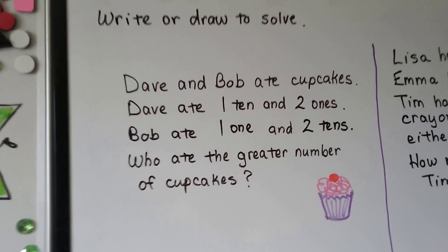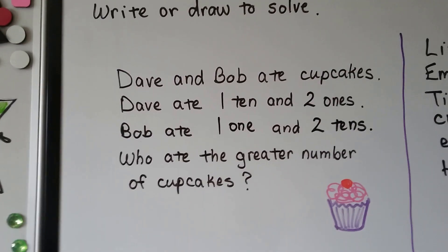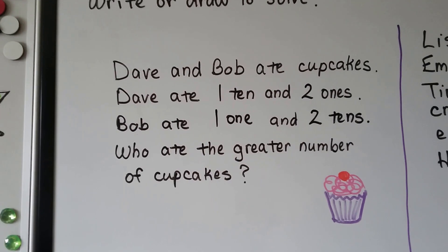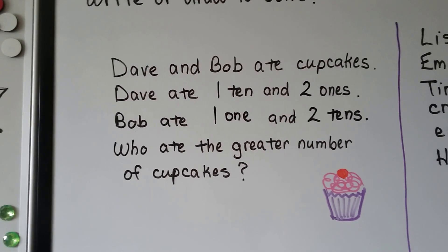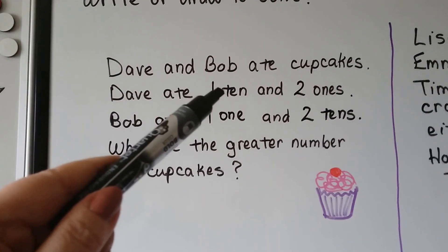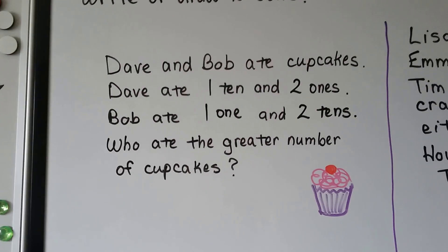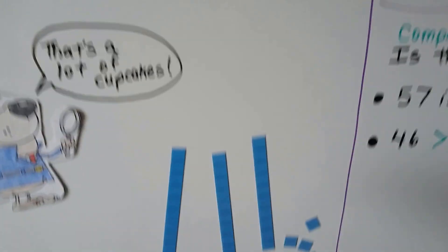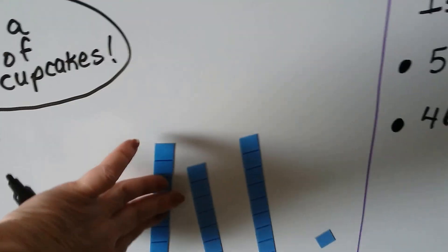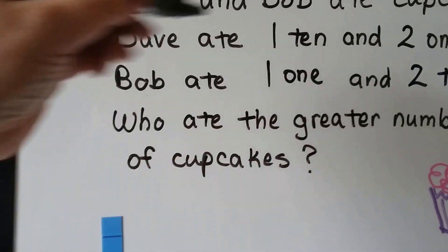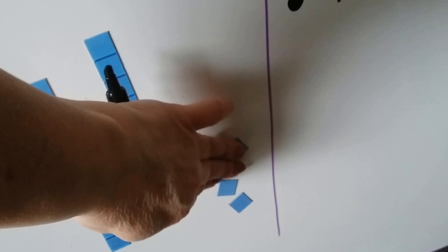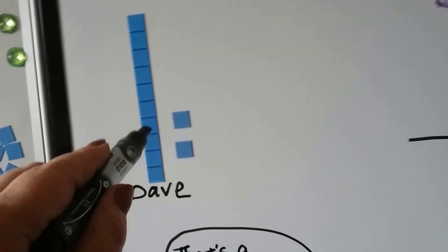We can write or draw to solve. Dave and Bob ate cupcakes. Dave ate 1 ten and 2 ones. Bob ate 1 one and 2 tens. Who ate the greater number of cupcakes? Look at the tens: Dave ate 1 ten and Bob ate 2 tens. We can use the rods to help us — the rods of 10. Dave had 1 ten and 2 ones.